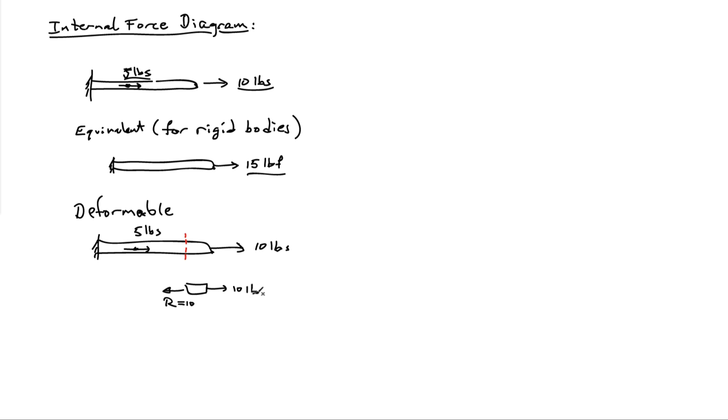Now, if I decide to make the section cut on the other side of the 5-pound force, I'll have my 10-pound force here, I'll have my 5-pound force, and I'll have the resultant. And that resultant for equilibrium is going to have to be equal to 15 pounds. So notice that the resultant at the first section cut was 10 pounds, and the resultant at the second section cut was 15 pounds. So the internal resultant inside my body is changing depending on position.